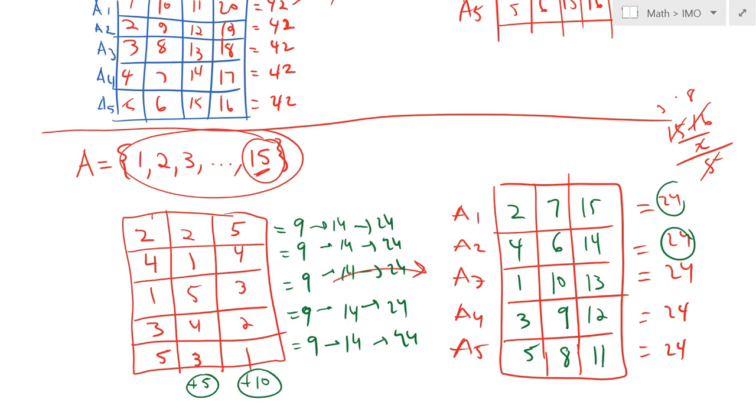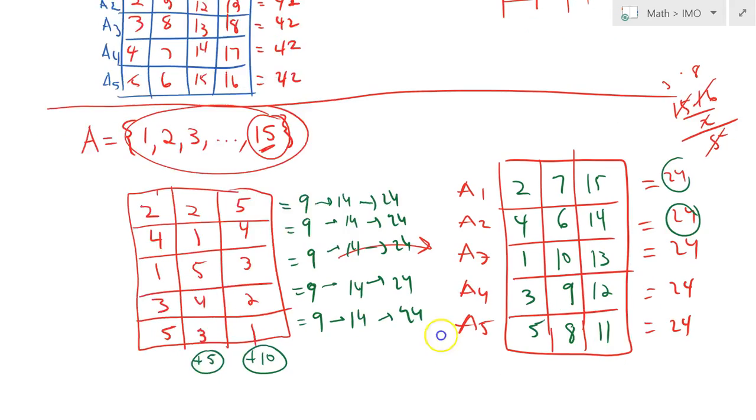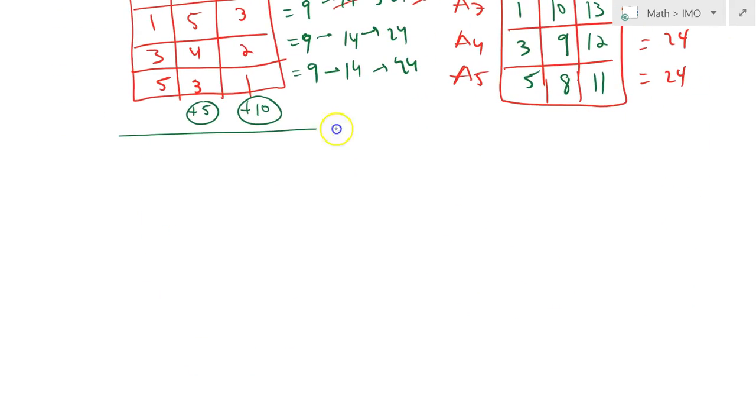So the sum of each row should be 24. And furthermore, I claim I will use each number only once. So the first column, I do nothing. Two, four, one, three, five. The second column, I add five. So it is seven, six, 10, nine, and eight. And the third column, I would get 15, 14, 13, 12, and 11. So I claim this construction works, which is obvious. Okay, now how to generalize it to the final result that we want? Okay, so here is a generalization. So what I would do is, first of all, let's put our list again here, just to remember, one, two, all the way to 1989.